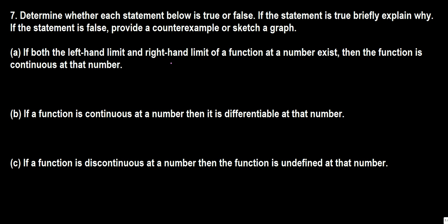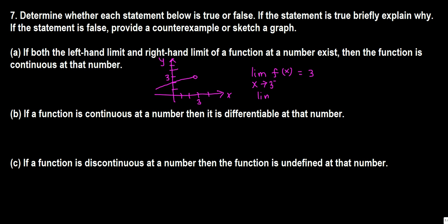Let's draw a graph with x-axis and y-axis. For this function, the left-hand limit when x approaches 3 from the left side is 3, and the right-hand limit when x approaches 3 from the right side is 5. The left-hand limit exists with value 3 and the right-hand limit at 3 also exists with value 5.